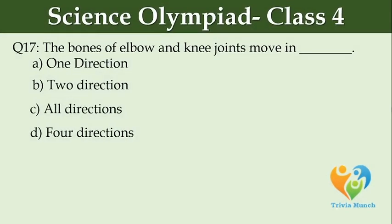The bones of elbow and knee joints move in dash. Option A: one direction. Option B: two directions. Option C: all directions. Option D: four directions.